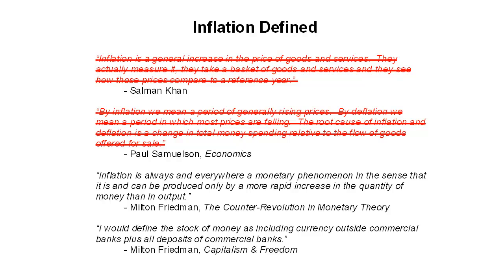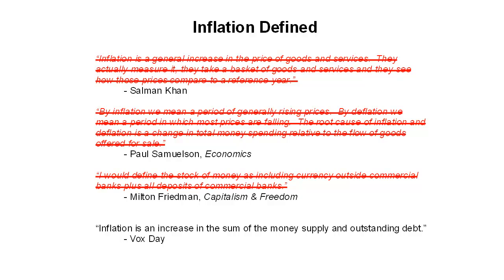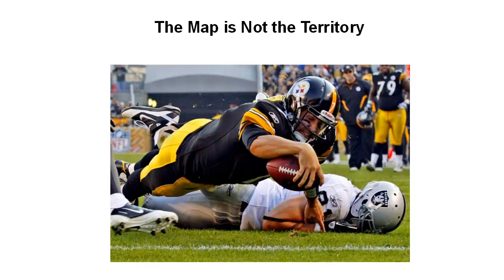That's closer to what inflation actually is, but it's not quite correct. What inflation actually is is an increase in the sum of the money supply and outstanding debt. I'm not going to get into that in this video. The purpose here is only to talk about how inflation A is not the Consumer Price Index, and B the Consumer Price Index is a flawed measure of inflation. The easiest way to understand it is perhaps to look at an analogy.